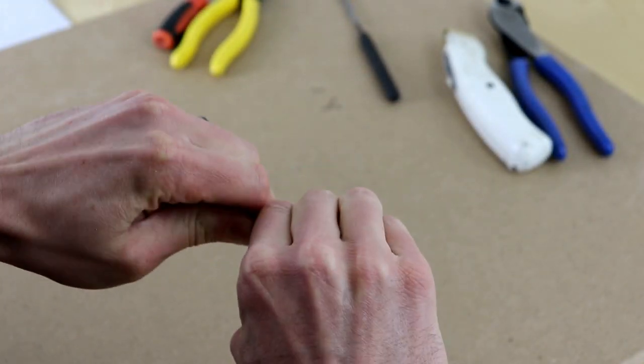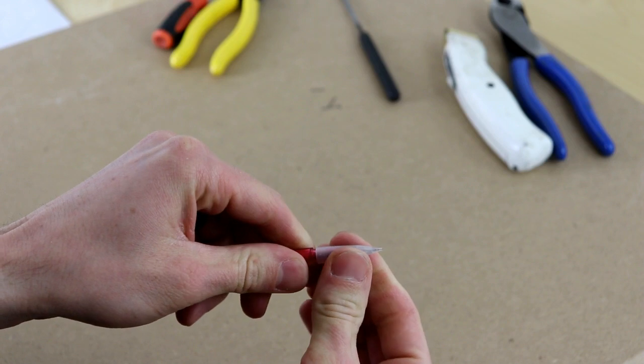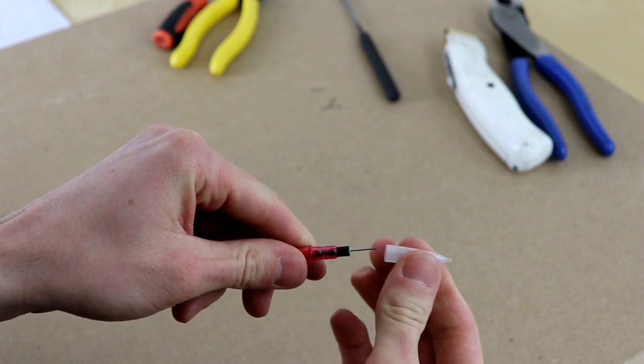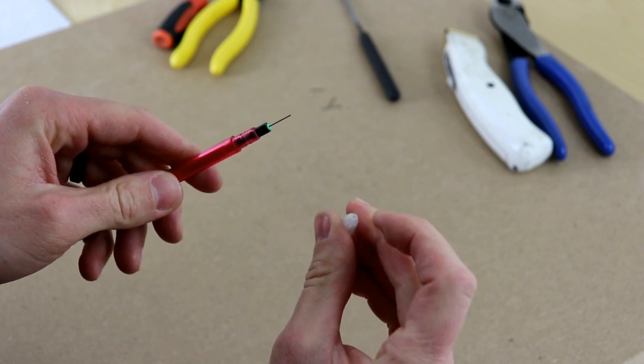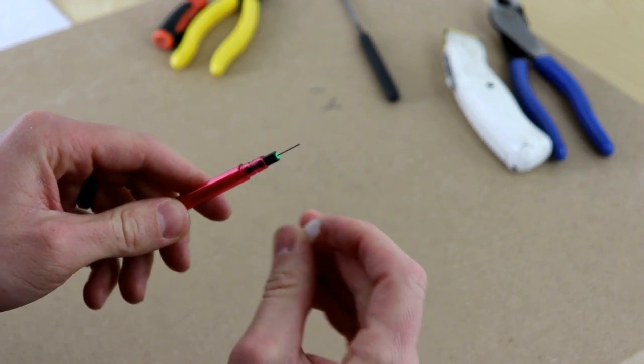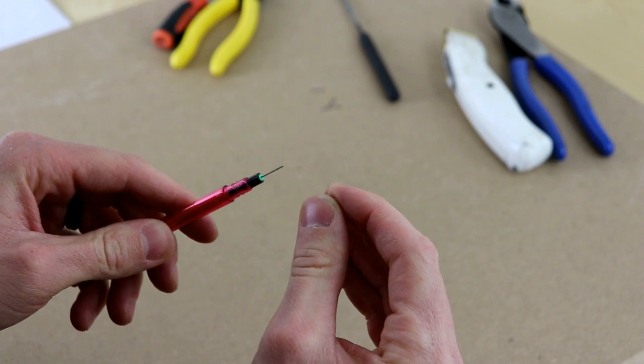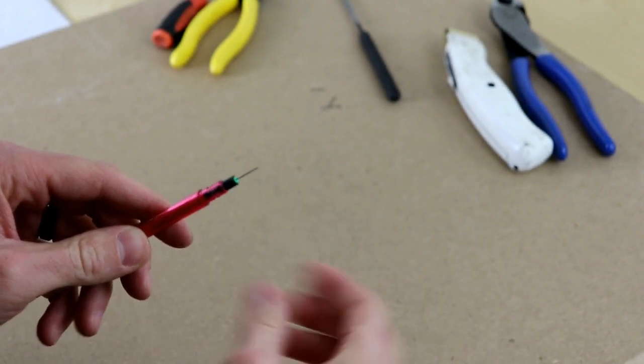This nose cone is held on by just a friction fit. If I'm careful about it I can take it off and not break the lead. There we go. So the nose cone as you can see has a hole in the center of it just big enough to allow lead to pass through but it still holds a real light grip on the lead.